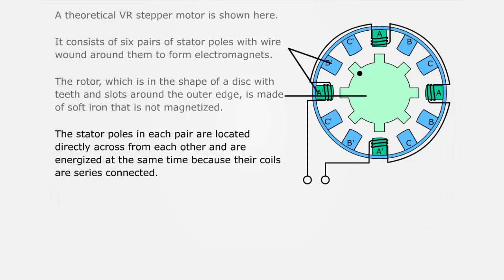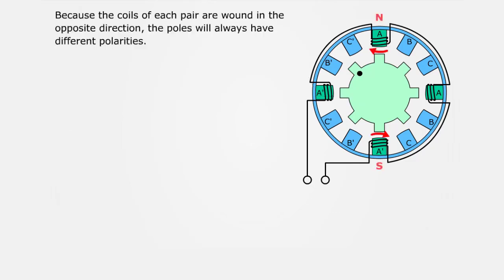The stator poles in each pair are located directly across from each other and are energized at the same time because their coils are series connected. Because the coils of each pair are wound in the opposite direction, the poles will always have different polarities.